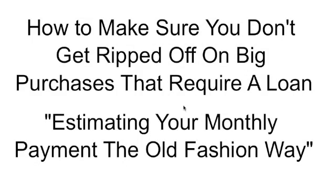How to make sure you don't get ripped off on big purchases that require a loan. Estimating your monthly payment the old-fashioned way: pencil and paper and a calculator. So here's some things that you need to make sure you have. Paper, pencil and scientific calculator. If you don't have a scientific calculator, make sure that you have a calculator nearby with exponents. Otherwise, you could be doing a lot of extra work. Try to make sure we're being as efficient as possible.